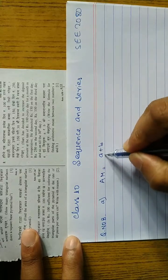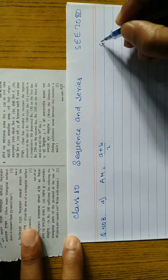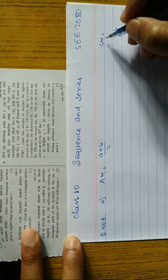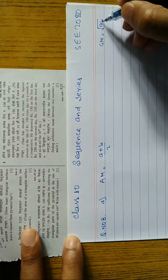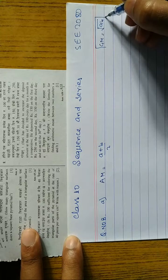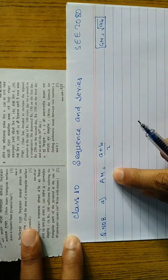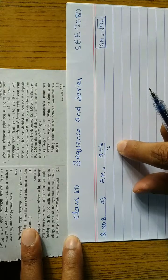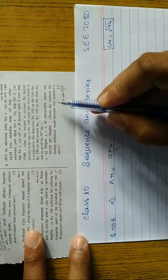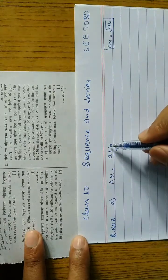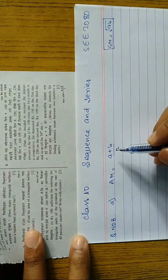Arithmetic mean between two numbers a and b is (a + b) / 2. If geometric mean, we have to write down the formula: geometric mean between two numbers is √(ab).